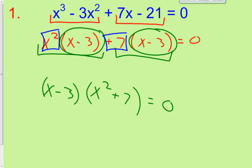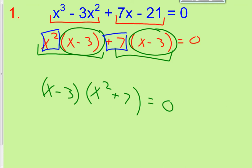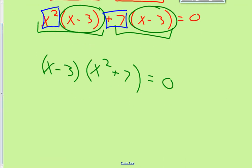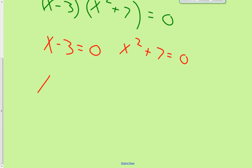That equals zero, so you've successfully factored it. You could foil this to get back to the original problem to check your work. Now that we've factored by grouping, we set these factors equal to zero: x minus 3 equals zero, and x squared plus 7 equals zero. Finishing up, x equals 3 — that's one of our roots.